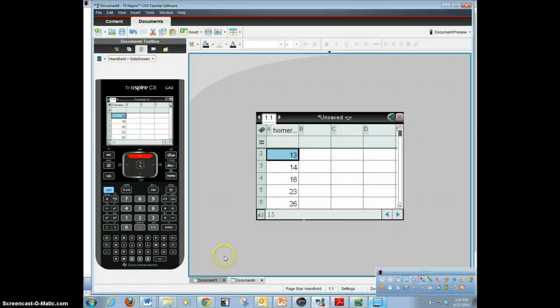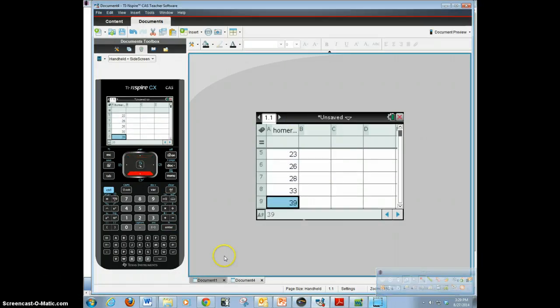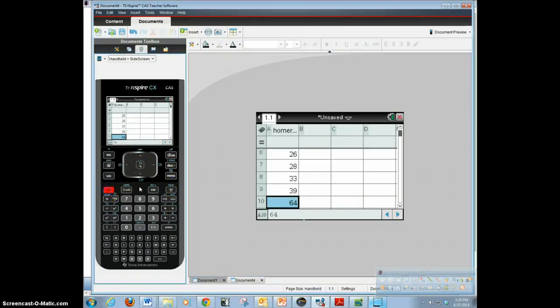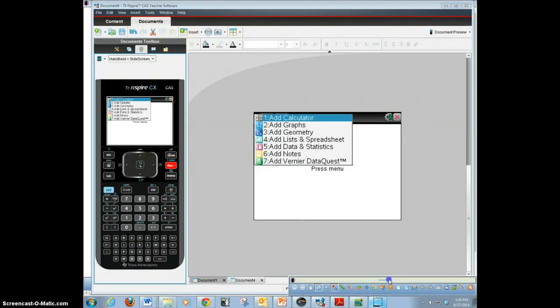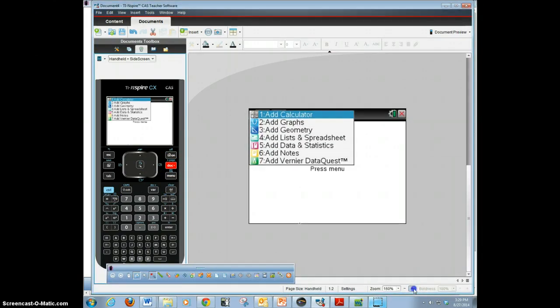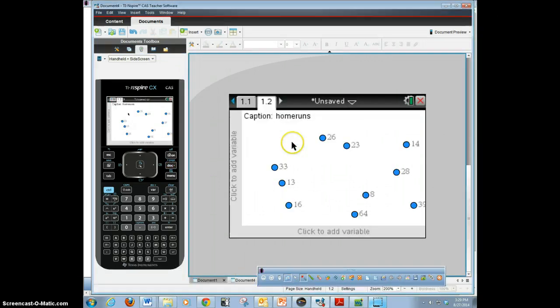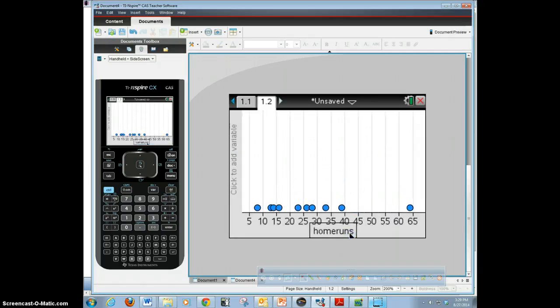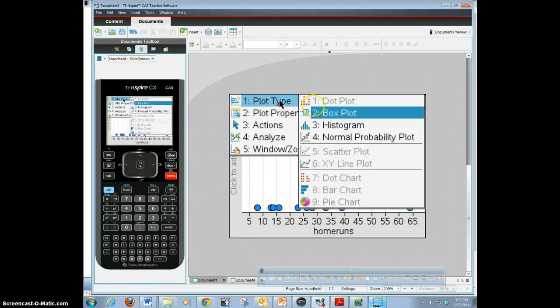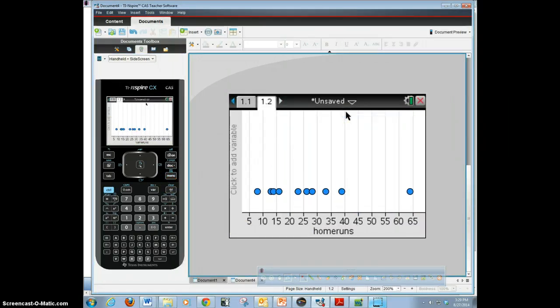After I enter in all these data, they don't need to be in order, but they're in order in this case. After I enter in these data, I'm going to add a new page using control doc. We're going to add data and statistics. This gives us all our data. On the bottom, we're going to click and add our variable, Home Runs. Then we're going to click Menu, Plot Type, Box Plot. And we'll get our box plot.